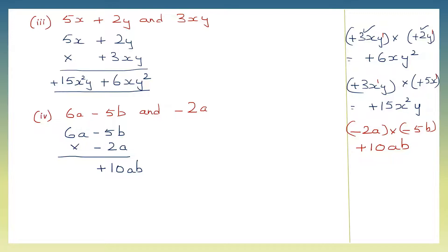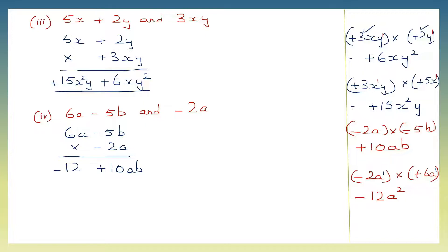Now we're going to multiply minus 2a into plus 6a. First the signs: minus into plus is minus. Then the numbers: two sixes are 12. Then a into a — there is 1a here and 1a here, so that makes it a to the power of 2. So it becomes minus 12a squared. So this is our answer.